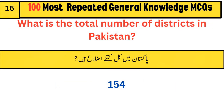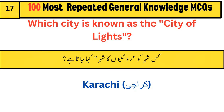What is the total number of districts in Pakistan? 154. Which city is known as the city of lights? Karachi.